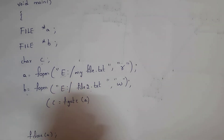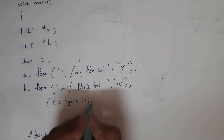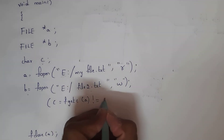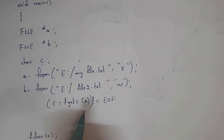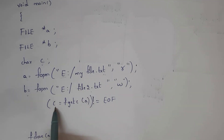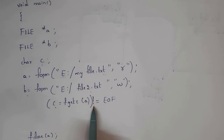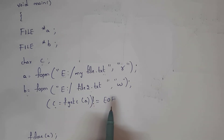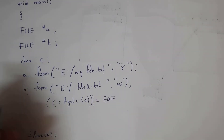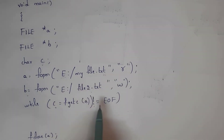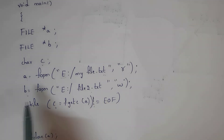So I need to give the condition that c is not equal to EOF, where EOF stands for end of file. I want to copy all the text in pointer variable a to character c until the last character. Since I am using this condition, I use a while loop: while(c != EOF).